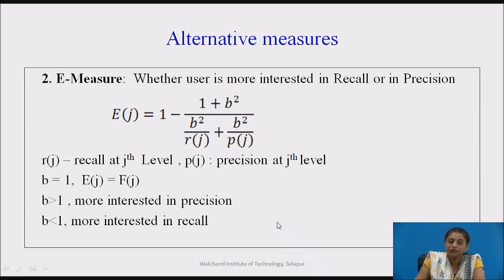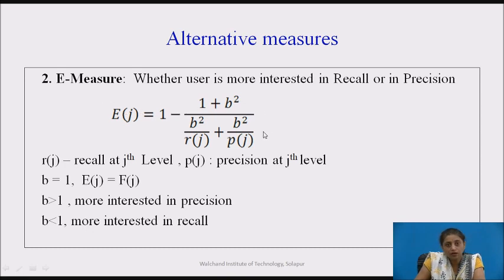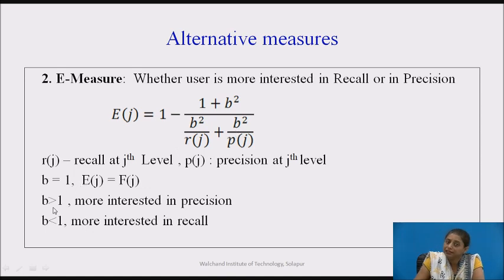In situations where users are more interested in either recall or precision, the E-measure combines both but allows you to weight the preference. If b equals 1, it is treated the same as the harmonic mean. If b is greater than 1, you are giving more interest to precision. If b is less than 1, you are giving more interest to recall.